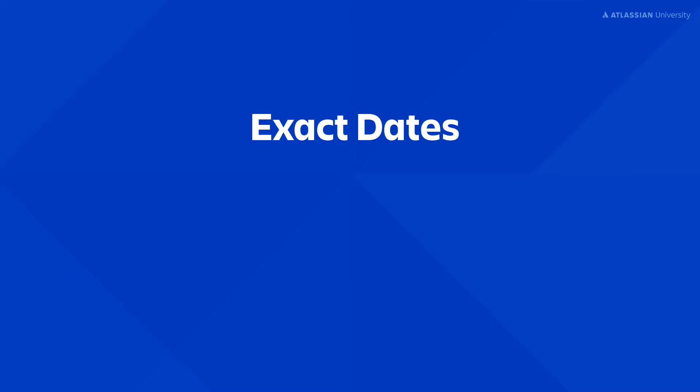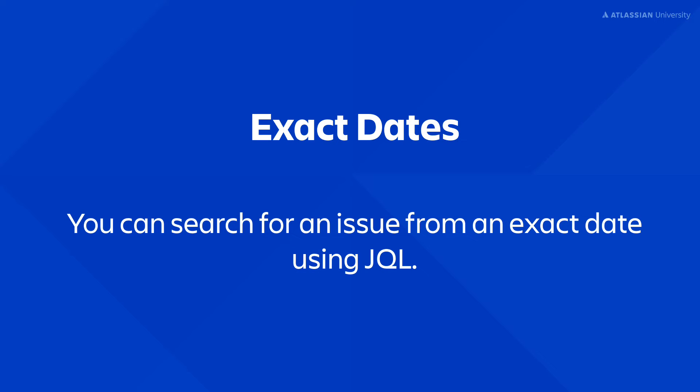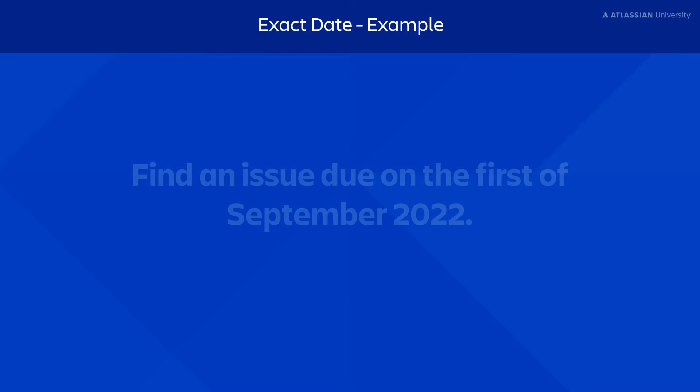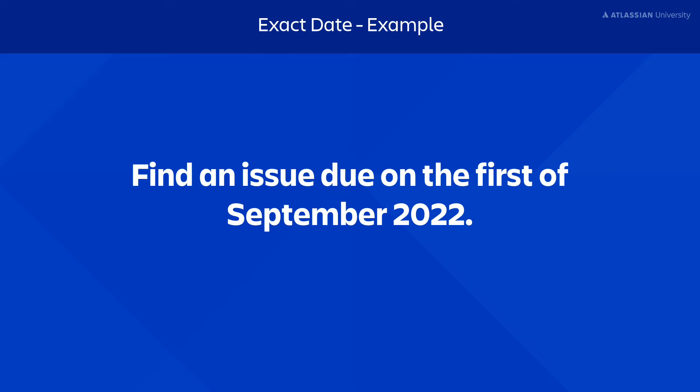Let's start with searching for exact dates. You can search for an issue from an exact date using JQL. For example, say you wanted to find an issue due on the 1st of September 2022.